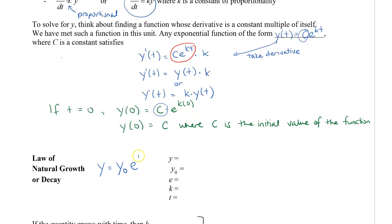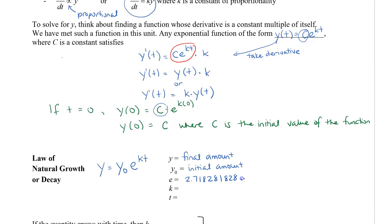We actually call this y-naught, with a little 0 on the bottom, times e to the power of kt. So y is what we call the final amount, y-naught is our initial amount, e is 2.718281828 and so on — a non-repeating number. k is called the proportionality constant, and t is our time.